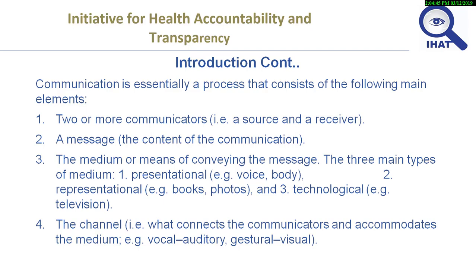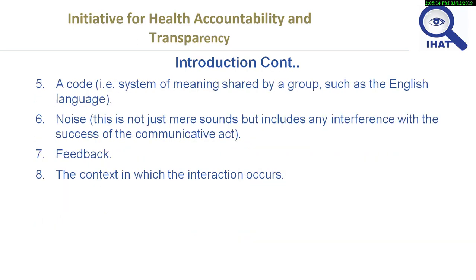Communication is essentially a process consisting of the following main elements: two or more communicators — a source and a receiver — a message, the medium or means of conveying the message, the channel of communication, a code, the noise which includes any interference with the success of the communicative act, the feedback, and the context in which the interaction occurs.